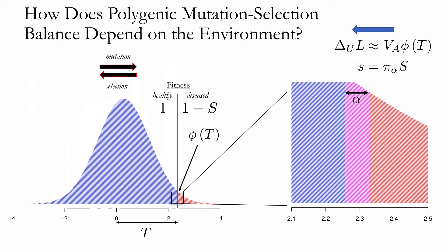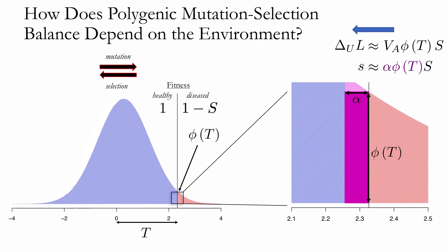We can unpack the selection gradient by recognizing that selection under the liability threshold model is very similar to truncation selection. Under truncation selection, all individuals on one side of the threshold are removed from the population with fitness zero. When only a small proportion is truncated, the selection gradient equals the height of the normal density function at the truncation point, phi of t. In our case, where individuals past the threshold merely experience some reduction in fitness, the selection gradient generalizes to the product of phi of t times the fitness cost S. So if the disease were lethal, S would be one, recovering the truncation selection gradient. The quantitative genetic approximation also implies that the risk-scale effect size can be approximated as the product of the liability-scale effect size alpha times phi of t — a good approximation as long as most variance comes from sites with small effect sizes.